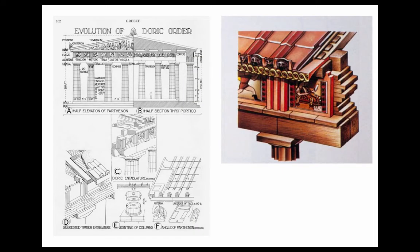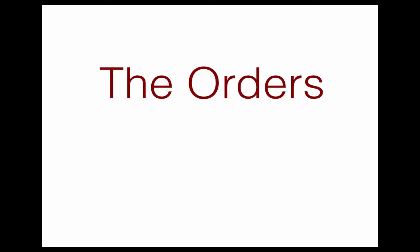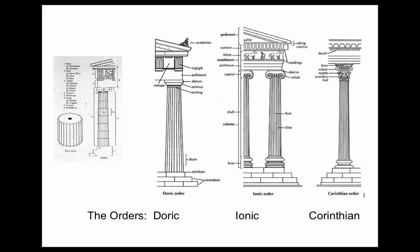It's suspected that perhaps the original temples were built in wood, and the detailing for that wood is what led to all the particulars of the temple's detailing. The key thing we have to know in Greek architecture is the orders — Doric, Ionic, and Corinthian. Those are the three Greek orders. When we get to Rome, we'll add one or two more.